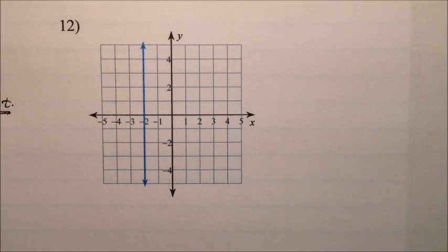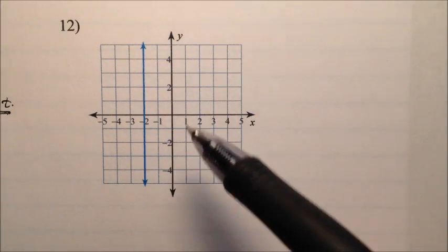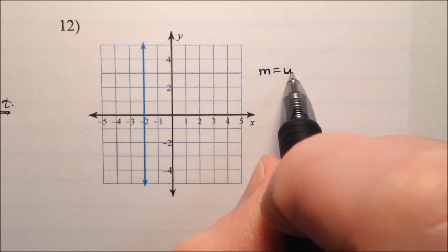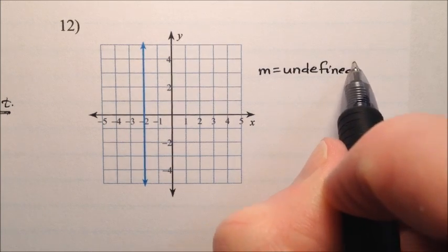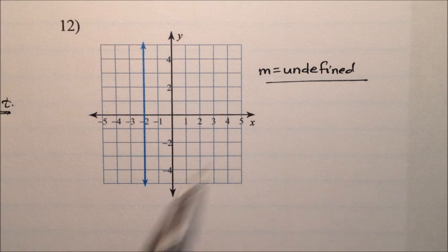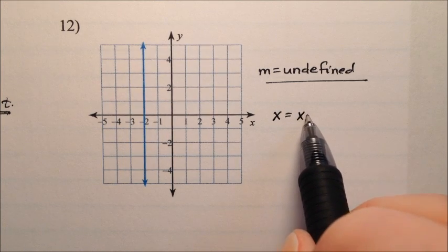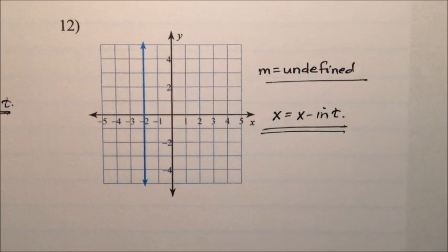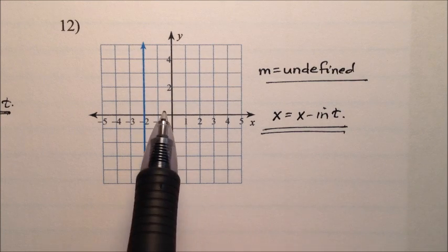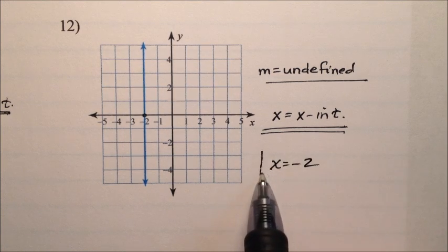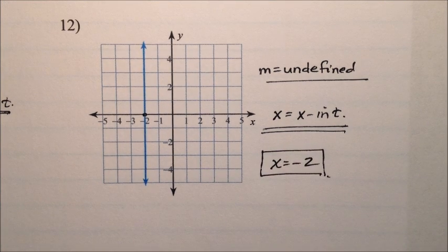In number 12, we have a vertical line. The slope of every vertical line is undefined. We can recall that the equation for every vertical line is x equals the x-intercept. The line is crossing at negative 2, so my equation should be x = -2. Number 12 is a vertical line whose equation is x = -2.